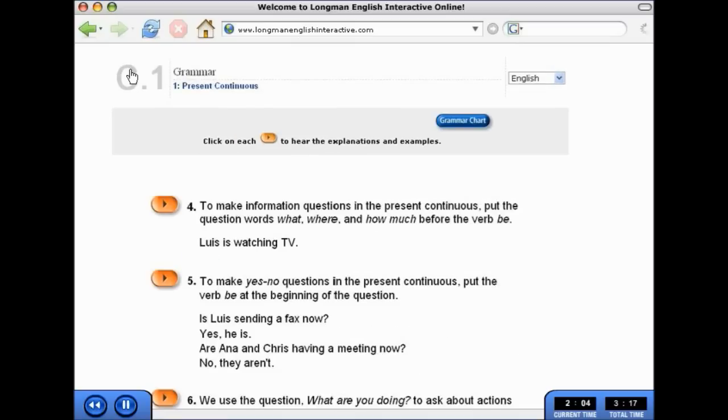Living Grammar dynamically illustrates how grammar works. To make information questions in the present continuous, put the question words what, where, and how much before the verb be. Luis is watching TV. Where is Luis watching TV? In his room.